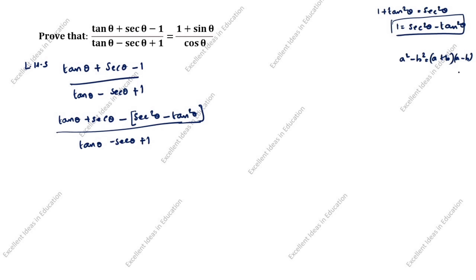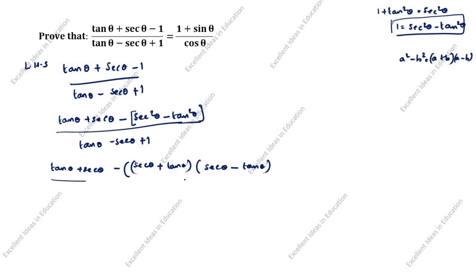Next we will split this as per this formula: tan theta plus secant theta minus, open the bracket where a is secant theta and b is tan theta. Open the bracket: a is secant theta minus b is tan theta, divided by tan theta minus secant theta plus 1.